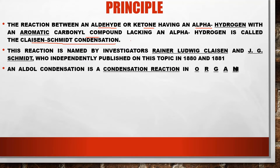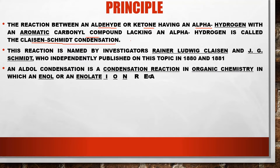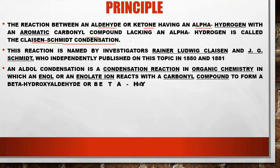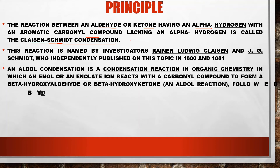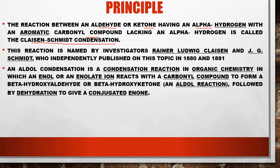An aldol condensation is a condensation reaction in organic chemistry in which an enol or an enolate ion reacts with a carbonyl compound to form a beta-hydroxy aldehyde or beta-hydroxy ketone. An aldol reaction followed by dehydration gives a conjugated enol. Since Claisen-Schmidt reaction is also known as aldol condensation, we need to understand what happens in aldol condensation.